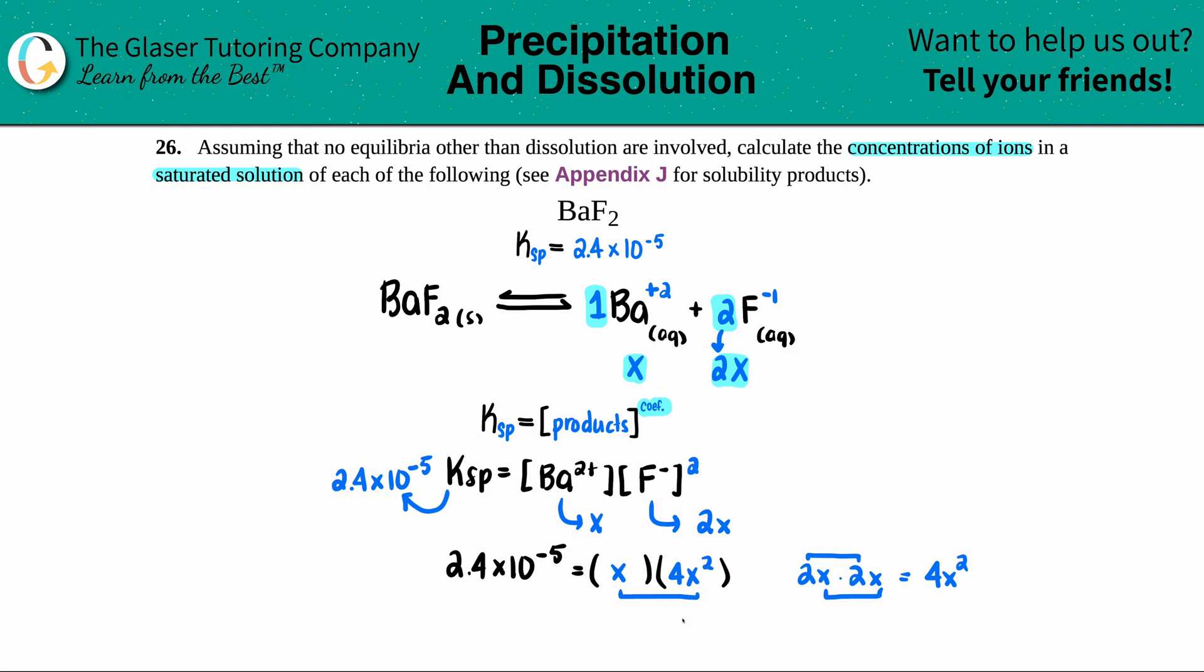I'm pulling together one more X. So the whole thing here would equal 2.4 times 10 to the negative fifth equals 4X cubed.